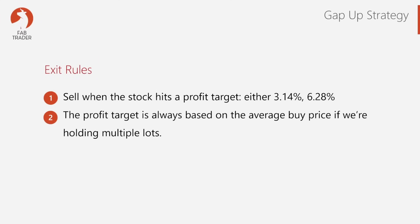For the exit rules: sell when the stock hits a profit target of either 3.14% or 6.28%. Mr. Mahesh gives two options — his preference is 6.28%, but people who want to churn trades faster can opt for 3.14%. The reason for these numbers is that 3.14 is pi (π), the mathematical constant. So the targets are either pi or 2 pi.